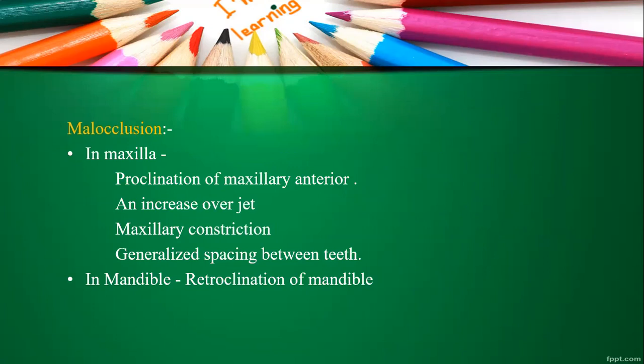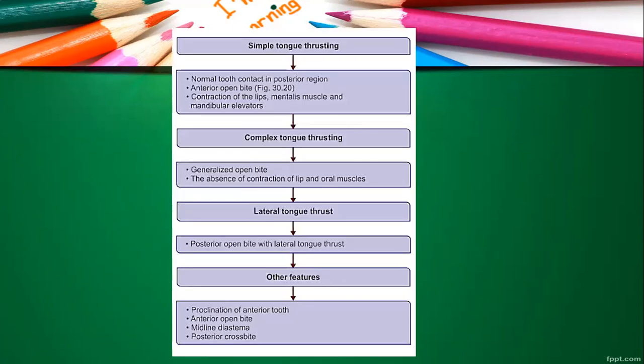In the mandible, retroclination can be seen. In simple tongue thrust, normal tooth contact in the posterior region is present, but anterior open bite will be present, with contraction of the lips, mentalis muscle, and mandibular elevators visible during swallowing. In complex tongue thrusting, there will be generalized open bite and absence of contraction of lip and oral musculature while swallowing. In lateral tongue thrust, posterior open bite is present, along with proclination of anterior teeth, midline diastema, and posterior crossbite.